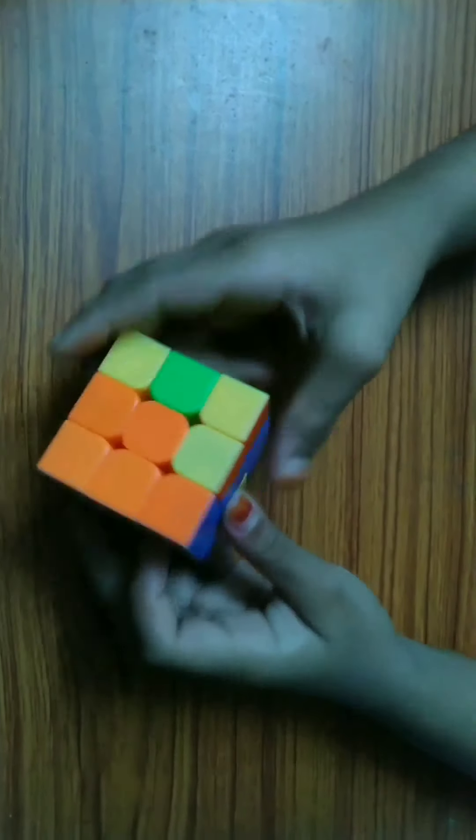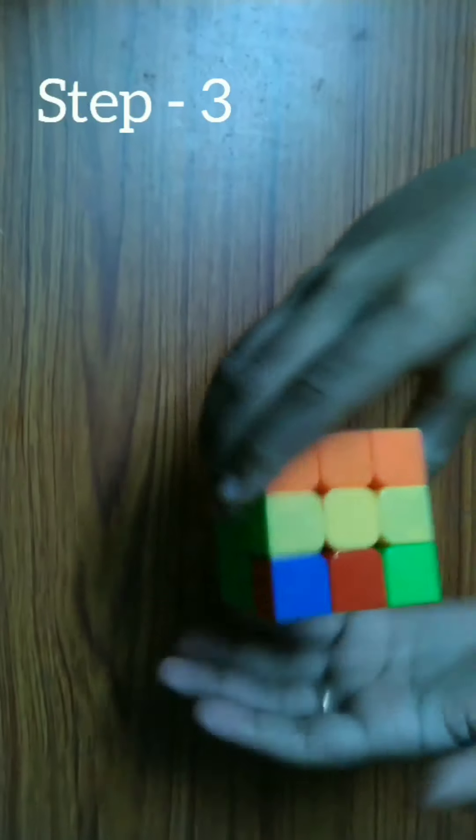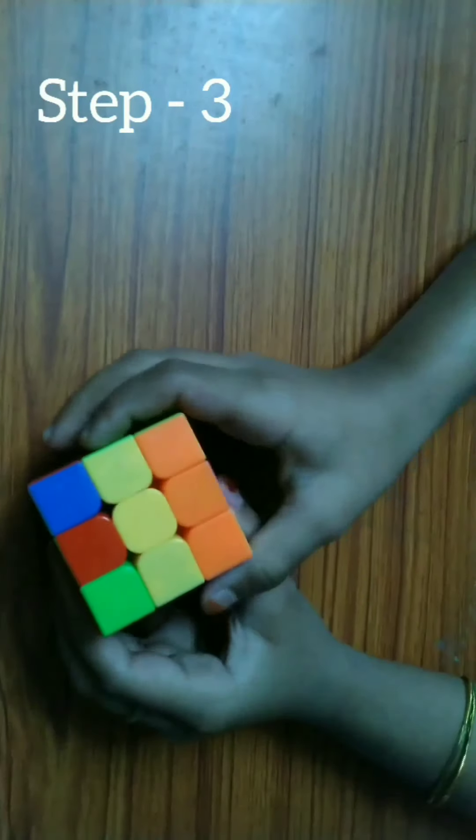Now we have solved the white face. Turn the cube upside down and solve the middle layer. Formula to get the top center one to left side is: